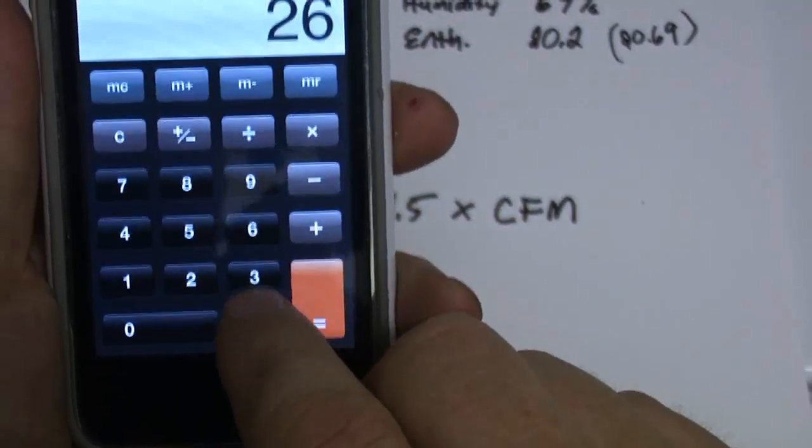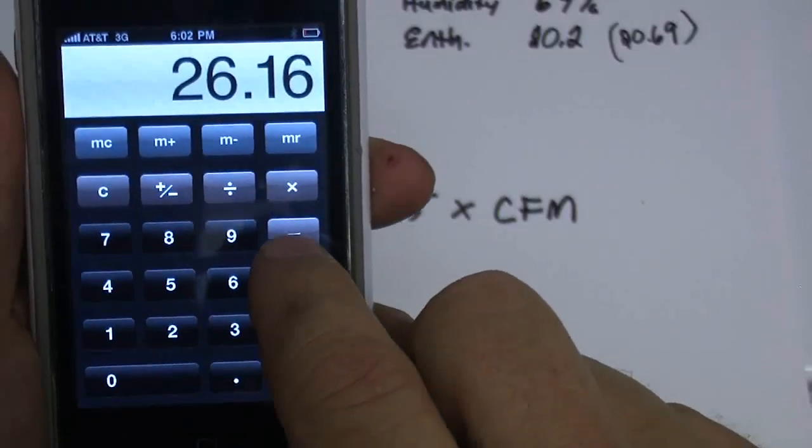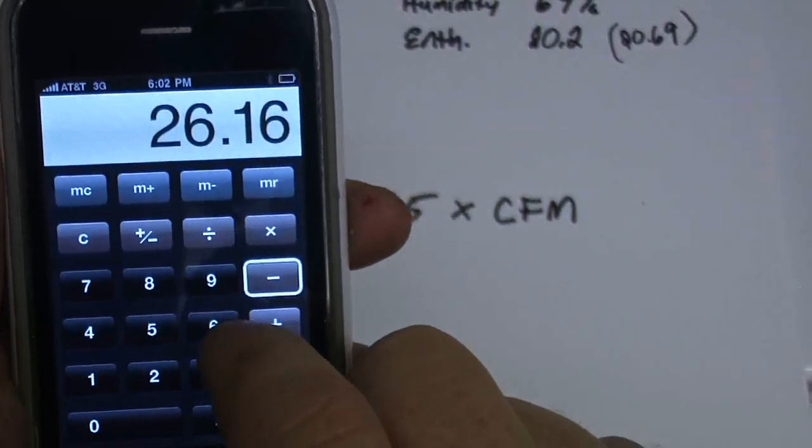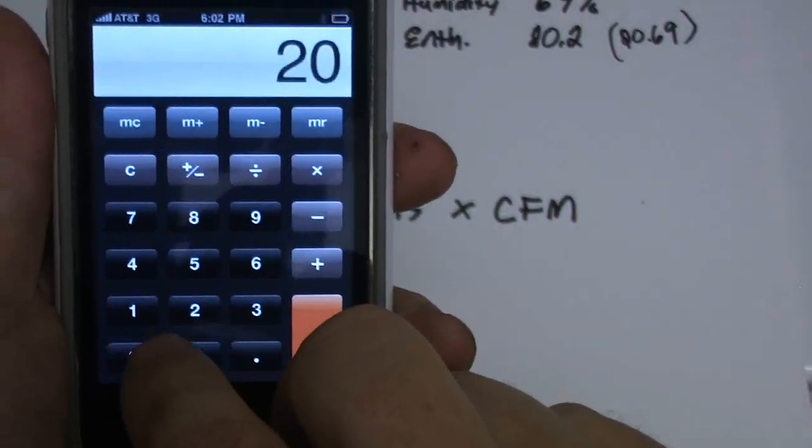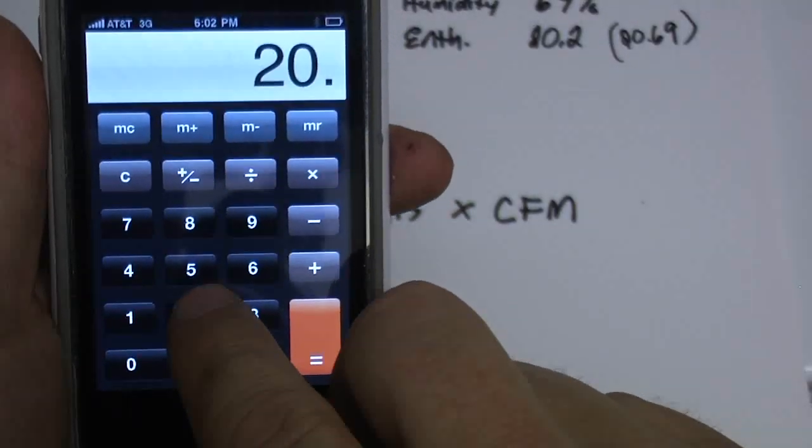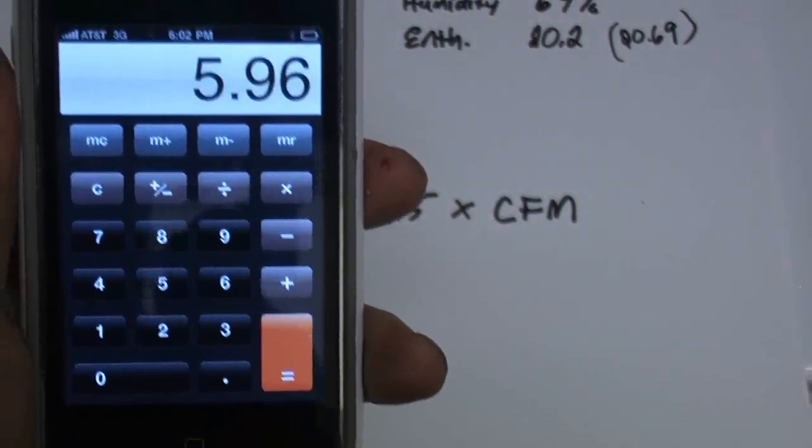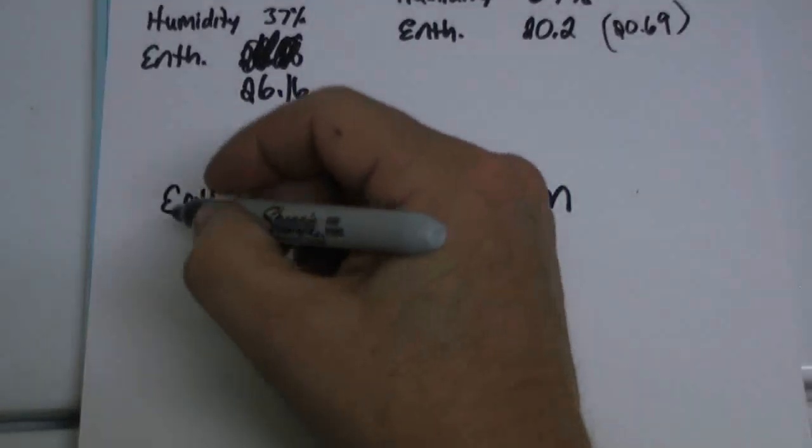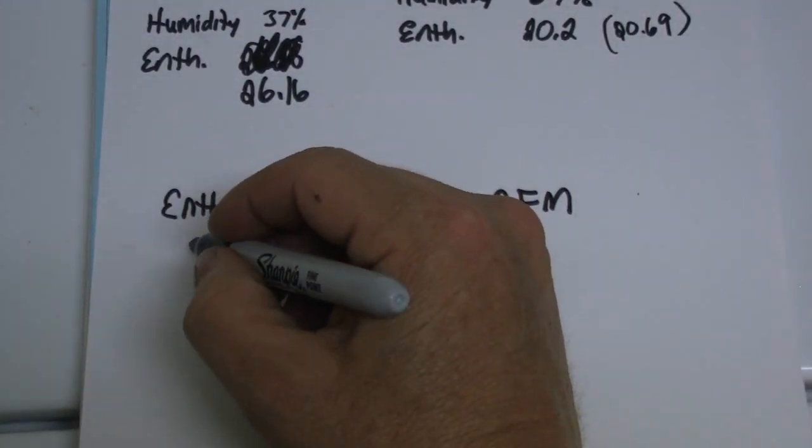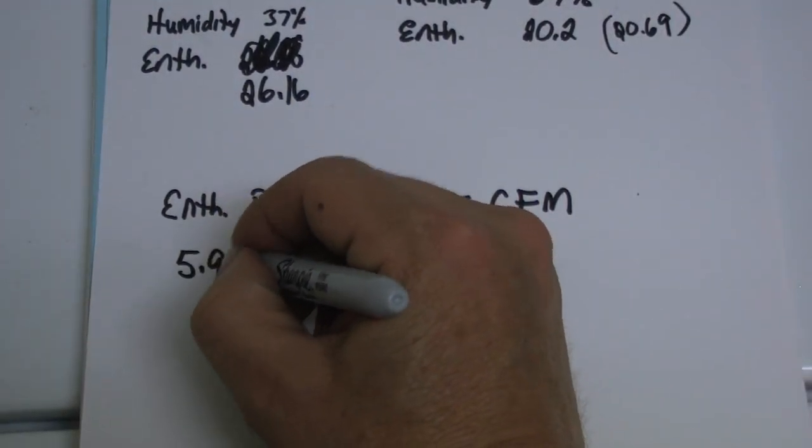We're going to go 26.16 for the return. We're going to subtract the supply from it, 20.2. It equals 5.96. So my enthalpy difference is 5.96.